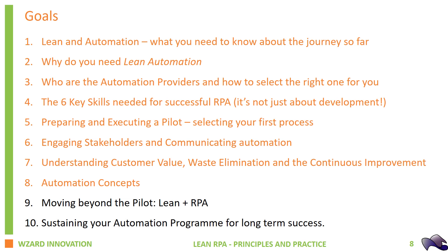We've talked about engaging stakeholders and communicating on the topic of automation. We've looked in detail at understanding customer value, waste elimination, and continuous improvement — all of the key lean principles. And today we've looked at the automation concepts right from the very beginning.